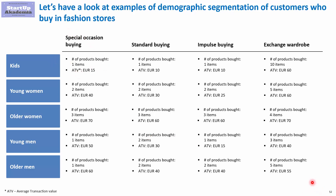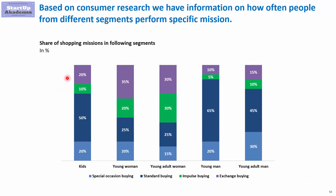We also have data on how often a specific segment does a specific mission. For example, when it comes to kids, special occasions are just 20% of all purchases, 50% would be standard buying, 10% impulse buying, and 20% exchange of wardrobe. When it comes to young women, exchange of wardrobe is much more frequent, whereas standard buying would be only 25% of purchases during the year.